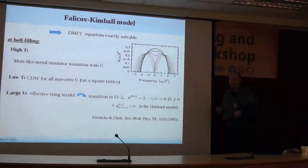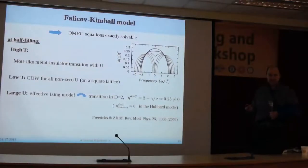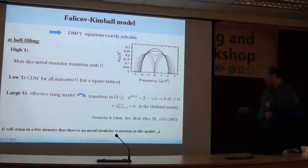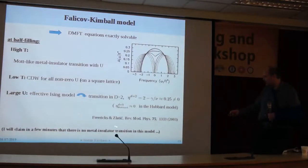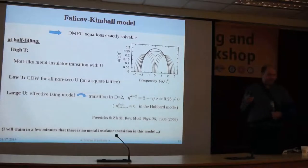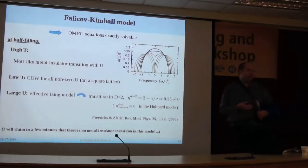If U becomes very large, you can map the model to an Ising model, because we have C2 symmetry from the charge. Since we are in two dimensions, the Ising model is well understood. There, one knows that the critical exponent eta — which tells you how non-Gaussian the theory is — is quite large: one quarter. One outcome of the talk will be that this model is not metallic anywhere at half-filling, so everything that DMFT sees for the metal-insulator transition should be taken with a grain of salt.